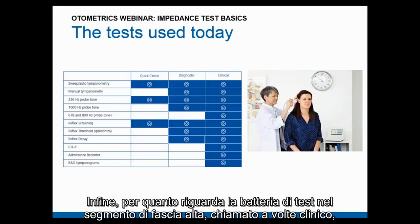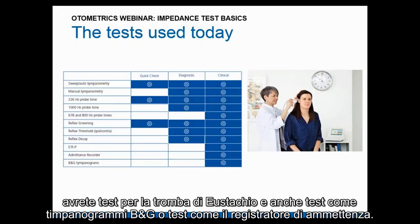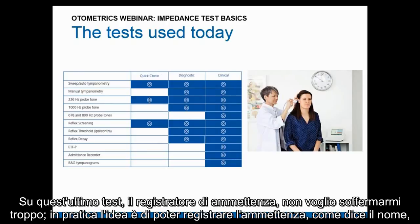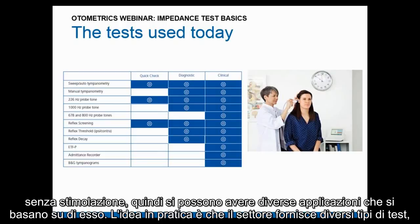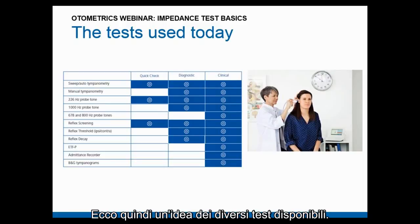In the high-end or clinical segment, you find all the tests described before, plus additional probe tones like 678 or 800 Hz, tests for the Eustachian tube, multi-frequency tympanograms, and the admittance recorder. The admittance recorder allows recording of admittance without stimulation. The industry provides increasing test capabilities as you move up through the segments, with the high-end offering as much as possible.